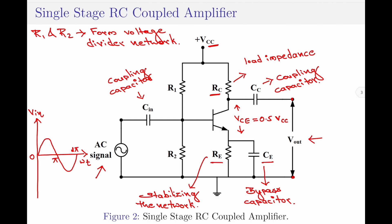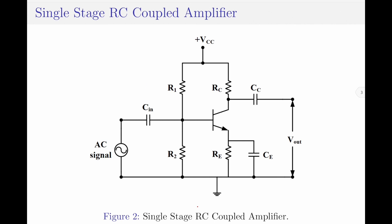We have now completed the discussion on the construction of a single stage RC coupled amplifier circuit. Let us now move on and discuss the principle of operation of the RC coupled amplifier circuit. As already discussed, the input signal is an AC signal. Since the circuit is designed to operate as an amplifier, we refer to the input signal as a weak AC signal. As you can see in the circuit diagram, a weak input signal is applied to the base-to-emitter network of the RC coupled amplifier circuit. The input capacitor C-in blocks the DC content in the input signal and passes only the AC content to the base terminal of the transistor.